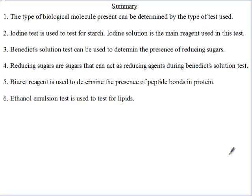In summary, the type of biological molecule present can be determined by the type of test used. We cannot be looking for protein and then use the iodine test. The iodine test is used to detect starch. The Biuret test is used to detect peptide bonds in proteins. Benedict solution test is used to detect reducing sugars, and the ethanol emulsion test is used to detect lipids. So the type of food nutrient or food molecule you are looking for will determine the type of test you are going to use.